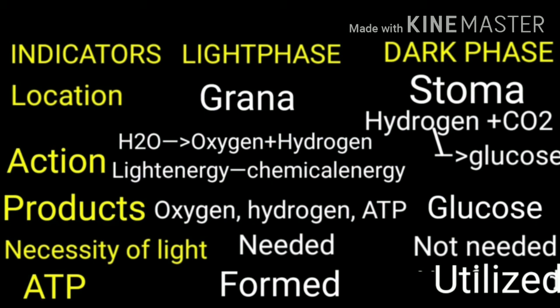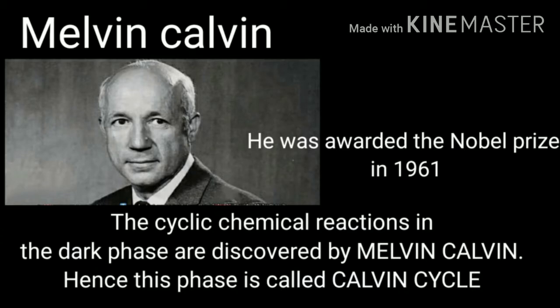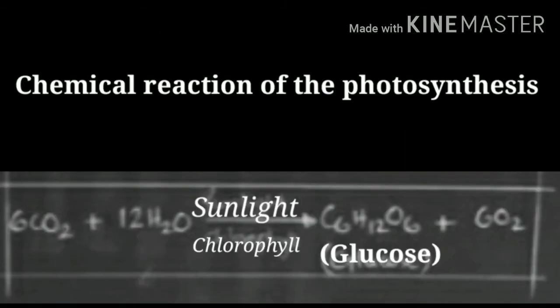The products of the light phase are oxygen, hydrogen, and ATP. In the dark phase, the product is glucose. The light phase requires light; the dark phase does not. ATP is formed in the light phase and is utilized in the dark phase through cyclic chemical reactions. These dark phase reactions were discovered by Melvin Calvin, so this phase is called the Calvin cycle. He was awarded the Nobel Prize in 1961.